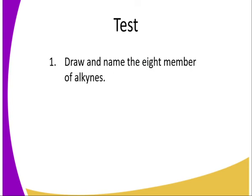Number 1: draw and name the 8th member of alkynes. Remember, just follow the general rule — the general molecular formula. We can get any member; we can get member number 10, 20, or 30 by simply following that rule.